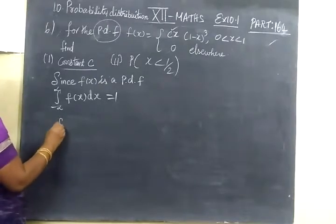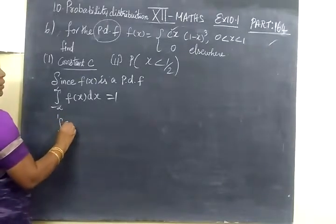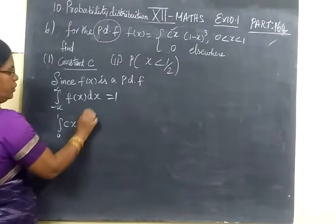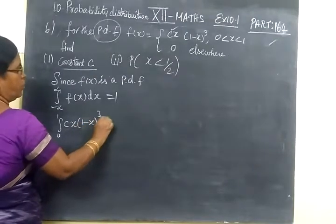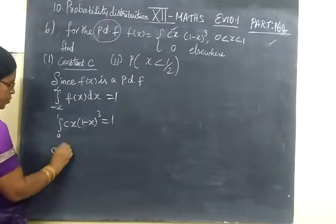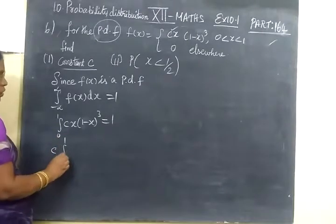So on the limit in our case, limit 0 to 1, C x bracket 1 minus x equals to 1, take C outside, integral 0 to 1.